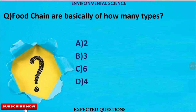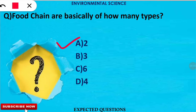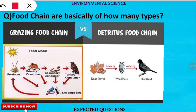The first question is: food chains are basically of how many types? The correct option is option A — there are two kinds of food chains: the grazing food chain and the detritus food chain. The grazing food chain starts from the green plant base, and the detritus food chain starts from dead organic matter. Both are very important in ecology.